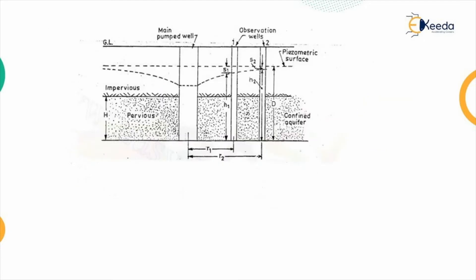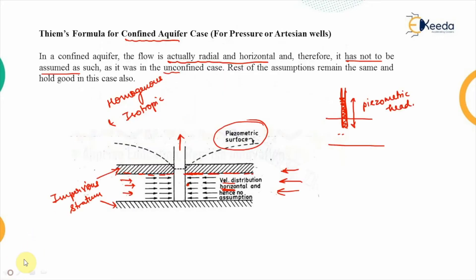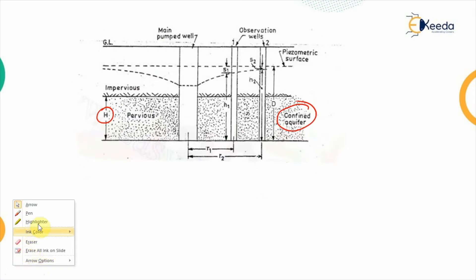Now, for the analysis purpose, this is the main well and this is the confined aquifer having the thickness h, while the total depth of the water table that is denoted by a capital D. So, there is a difference in that. Along with the main pumped well, we are again inserting the two observation wells that is 1 and 2 at a radius r1 and r2.